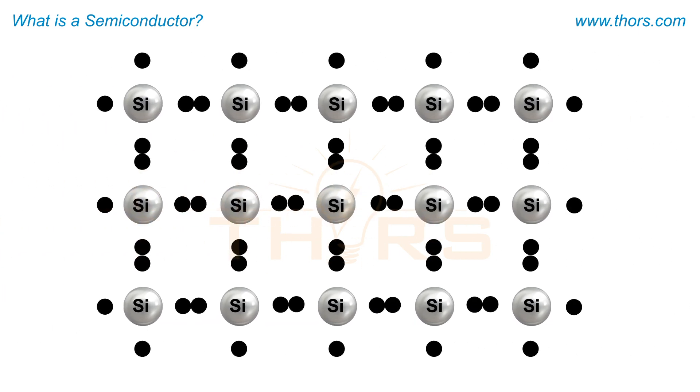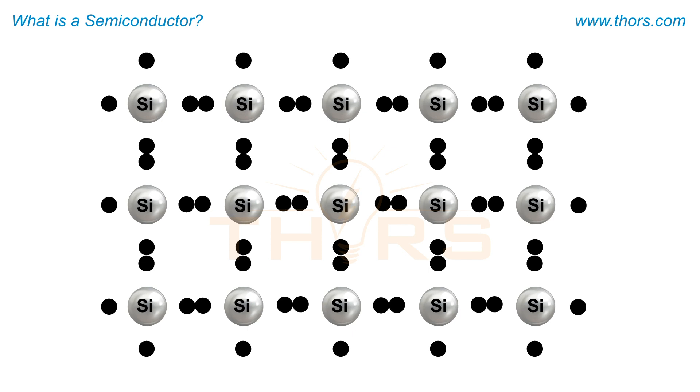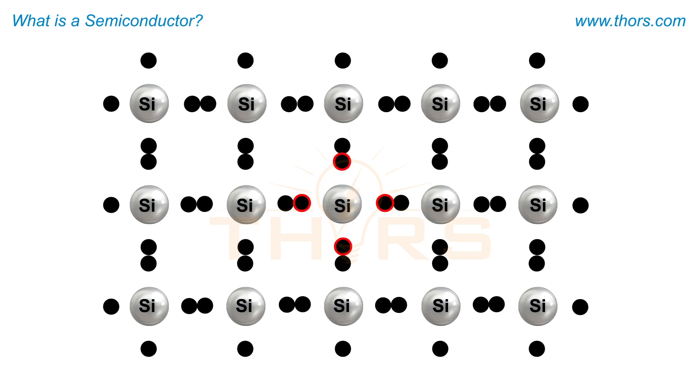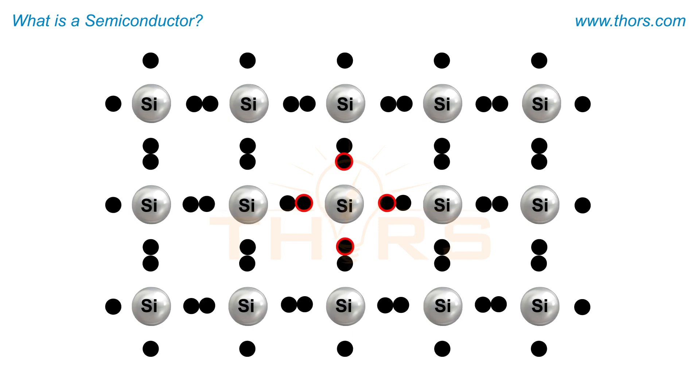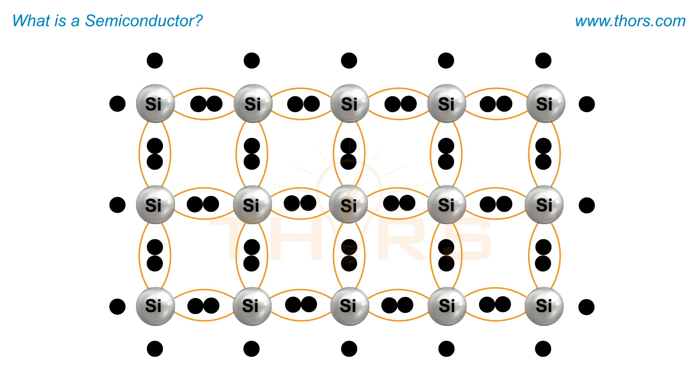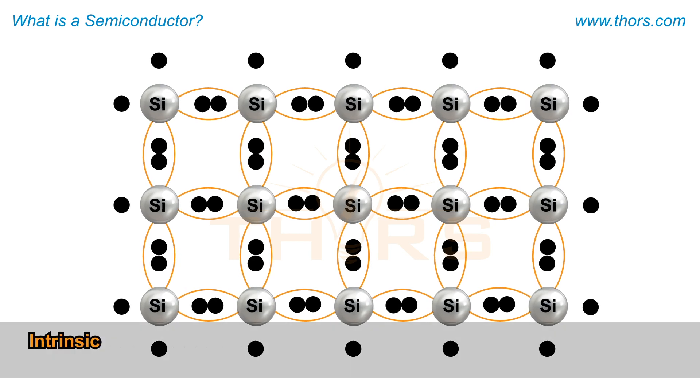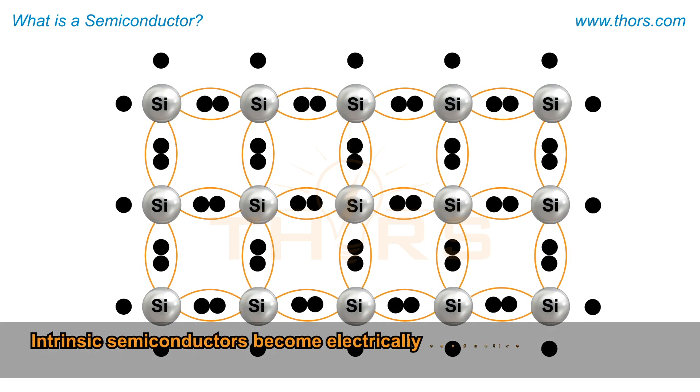Intrinsic semiconductors such as silicon are pure forms of semiconductors that contain four valence electrons, or negatively charged particles in the outermost shell, which easily pair with other silicon atoms making it non-conductive at room temperature.